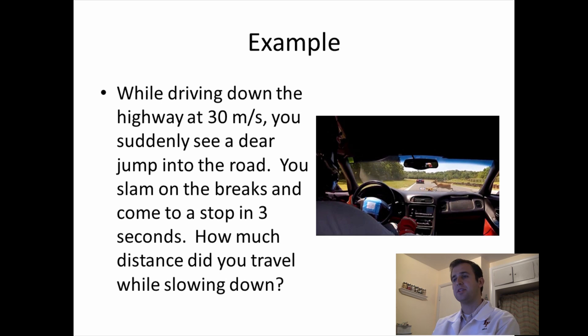The easiest way to probably learn this is to see a couple of examples. So let's run through a couple really quickly so you can see the way that I would solve these. Our first example is us driving down the highway at 30 meters per second, when suddenly a deer jumps out into the road. We slam on the brakes and we come to a stop in three seconds. What's the distance that we travel while we're slowing down?